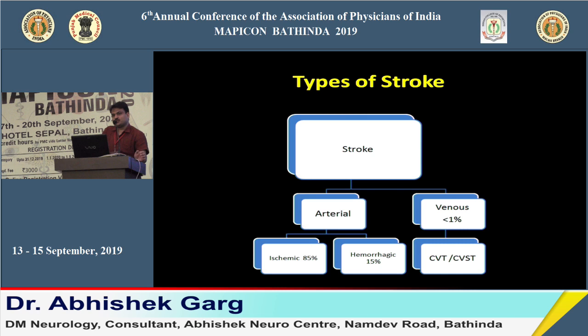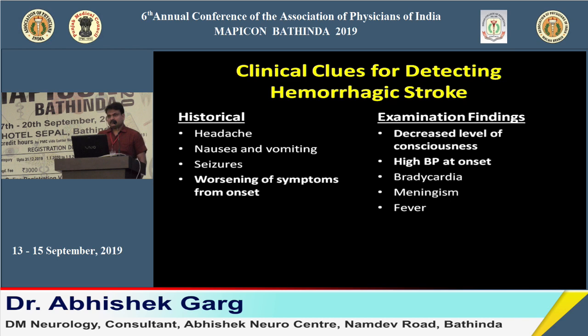Stroke is classified into two categories: arterial and venous stroke. Almost 90 percent of strokes are arterial, and less than one percent are venous. Arterial strokes are further divided into ischemic stroke (85 percent) and hemorrhagic stroke (10 to 15 percent).